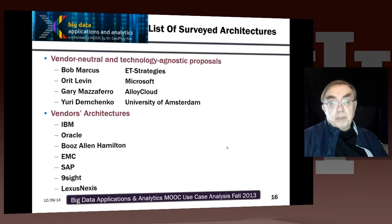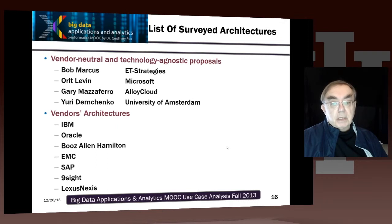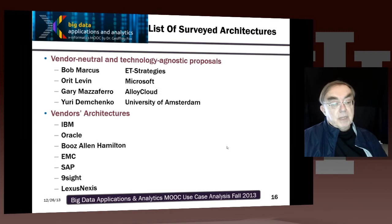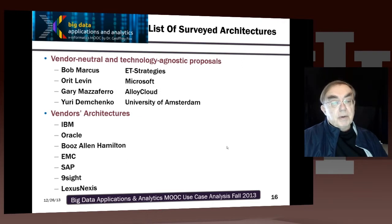This subgroup started off by looking at lots of different architectures. We had some which are called vendor-neutral and technology agnostic — generic architectures from Bob Marcus, Dorit Levin, Gary Mazzaferro, and Yuri Dimenshko — three commercial and one academic. Then we looked at vendor architectures covering a variety of different types of vendors: IBM, Oracle, Booz Allen, EMC, SAP, Ninesight, and LexisNexis. Out of all that came a descriptive discussion of architecture and then a final summary where it puts everything together.